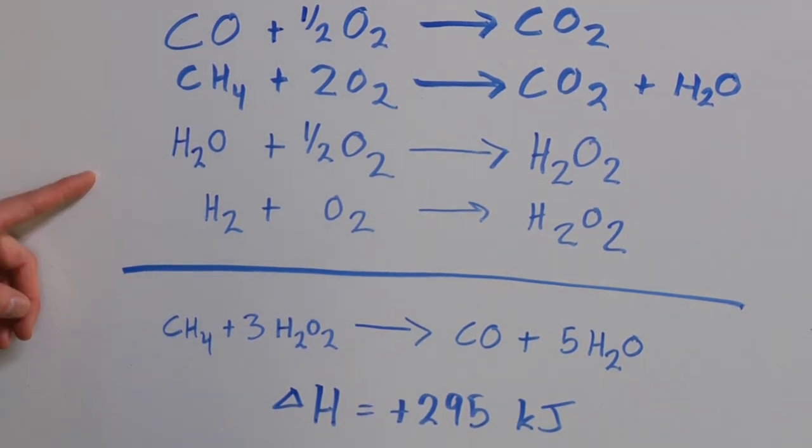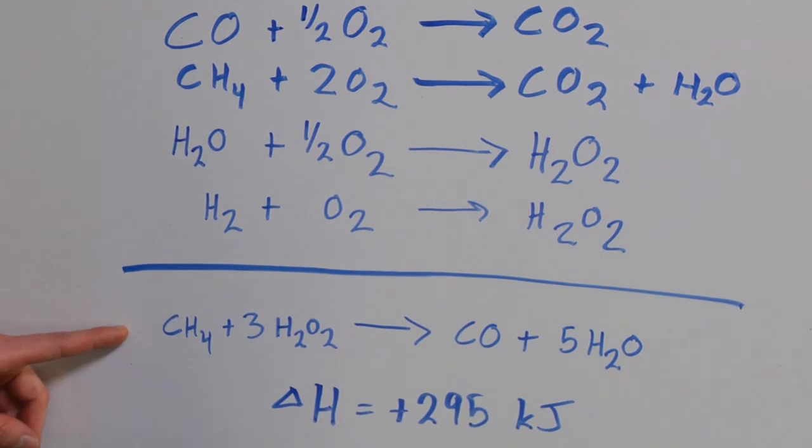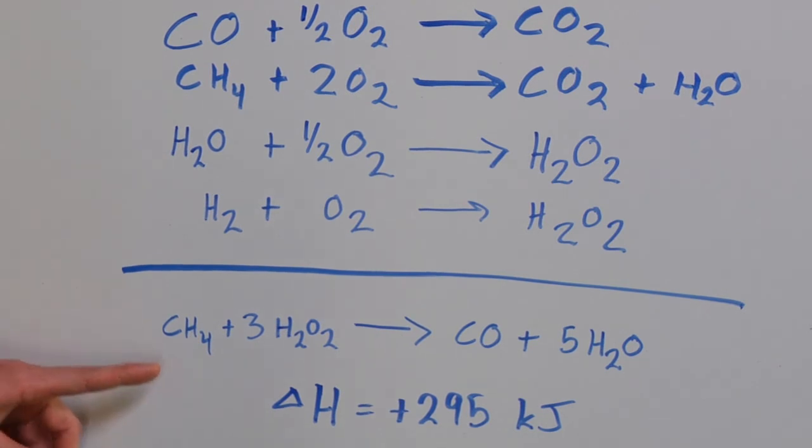But what Hess's Law says is it doesn't really matter how many steps are going on here. We can condense these, flip them around, do whatever we want, and make it into one somewhat simpler equation, which says methane plus peroxide leads to carbon monoxide and water.